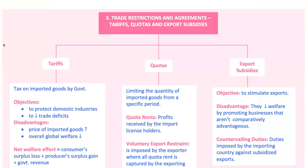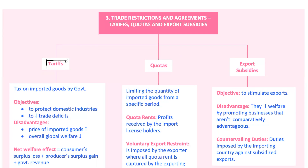Now let's talk about trade restrictions and agreements. We'll focus on tariffs, quotas, and export subsidies — these are the tools governments use to control how much domestic households and companies can trade with other countries. First up, tariffs: these are just taxes slapped on imports. Then we have import quotas, which are limits on the number of goods that can be imported — think of it as a cap on imports for a certain time.